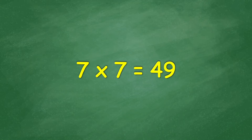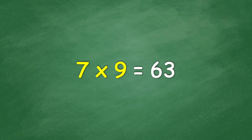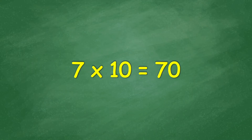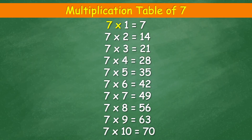7 times 8 equals 56. 7 times 9 equals 63. 7 times 10 equals 70.